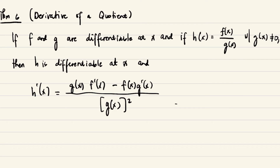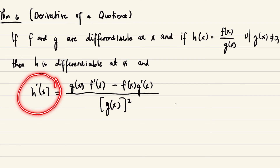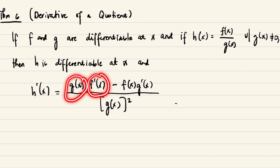Our last theorem is the derivative of a quotient. If h = f/g where g ≠ 0 and both f and g are differentiable at x, then h is differentiable and its derivative is given by the quotient rule. There is a mnemonic: 'low d-high minus high d-low, all over low squared' — meaning (g·f′ − f·g′) / g².